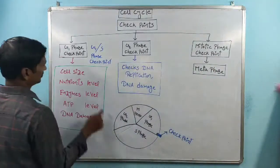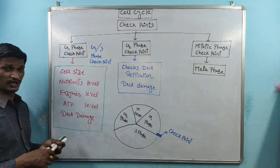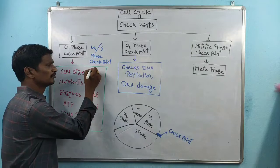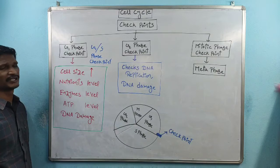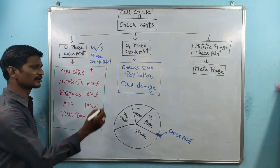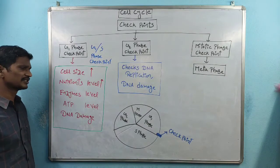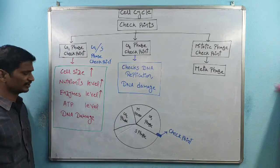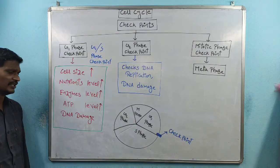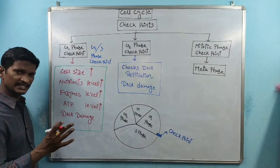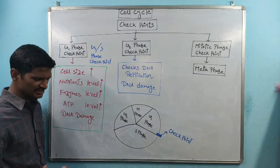At the G1 phase checkpoint, several things are checked: whether cell size has increased, whether nutrient levels are present, whether ATP levels are sufficient, and whether there is any damaged DNA present. If damaged DNA is present, it must be repaired — this is the DNA repair mechanism.